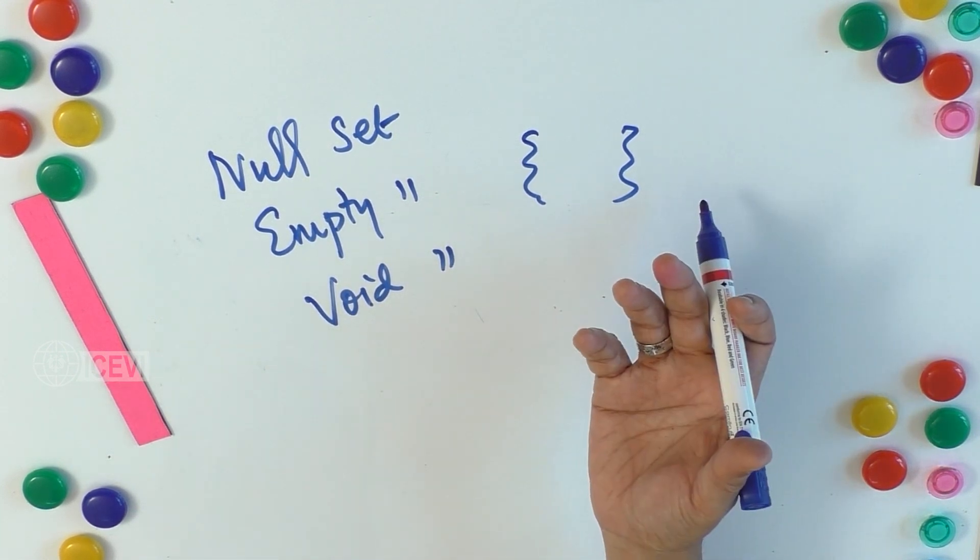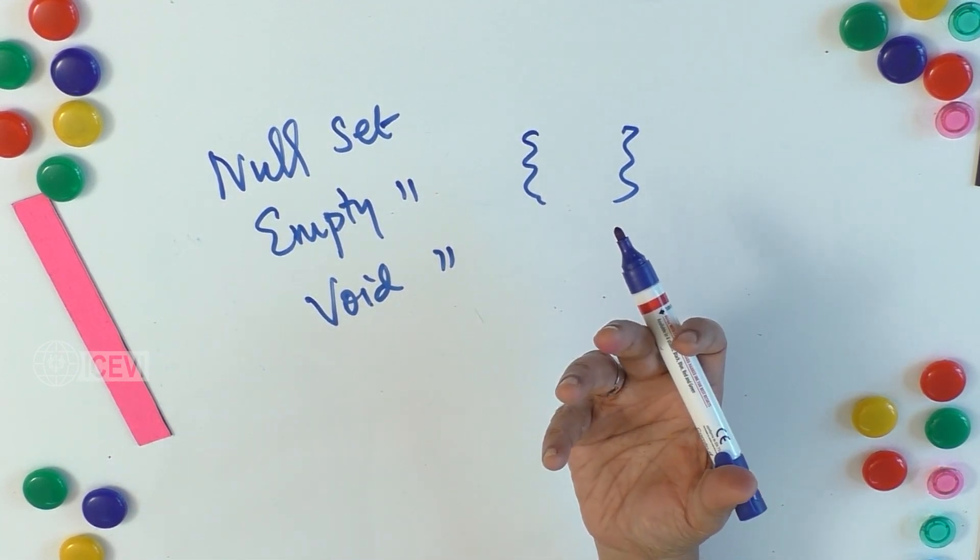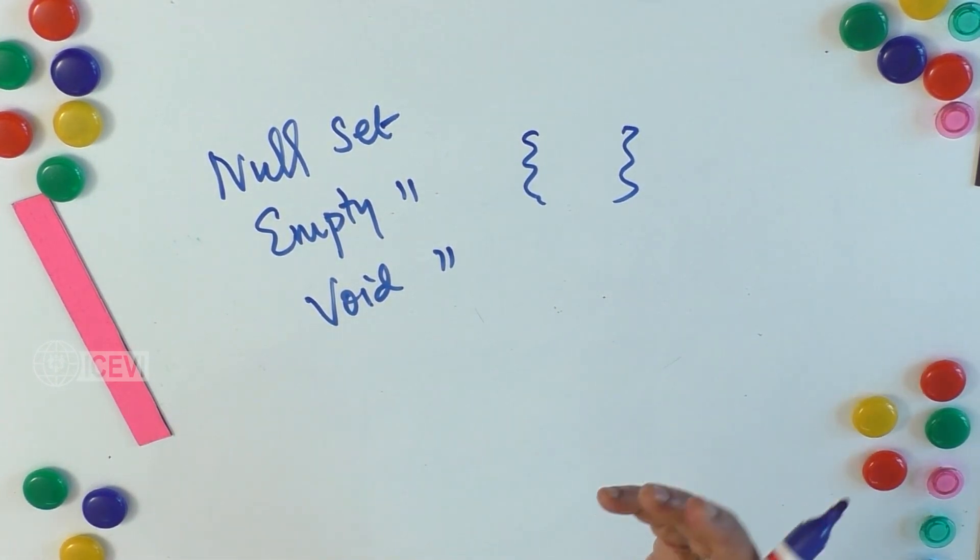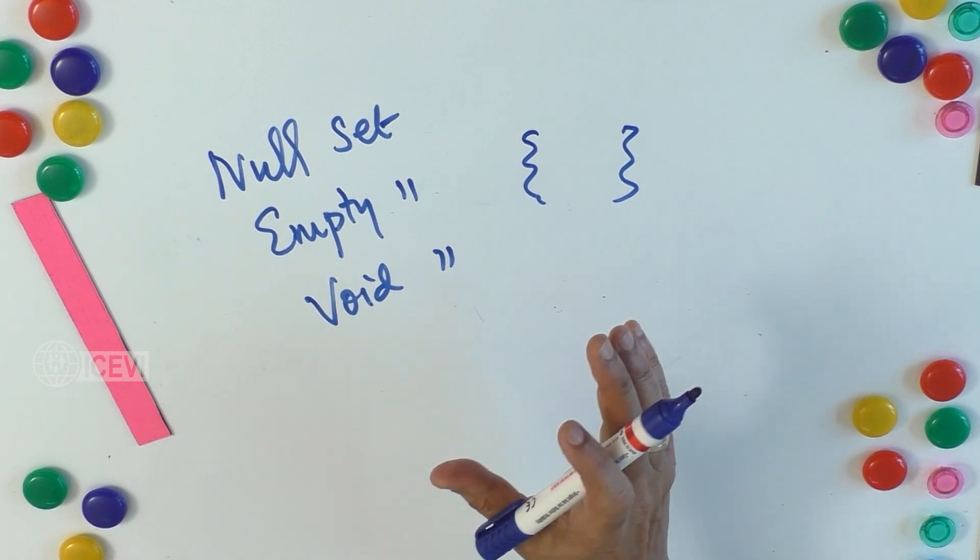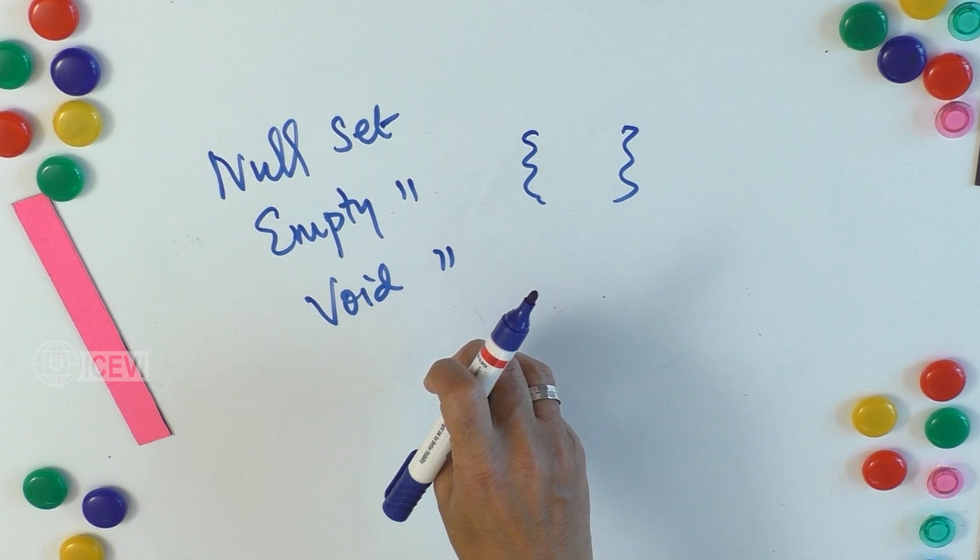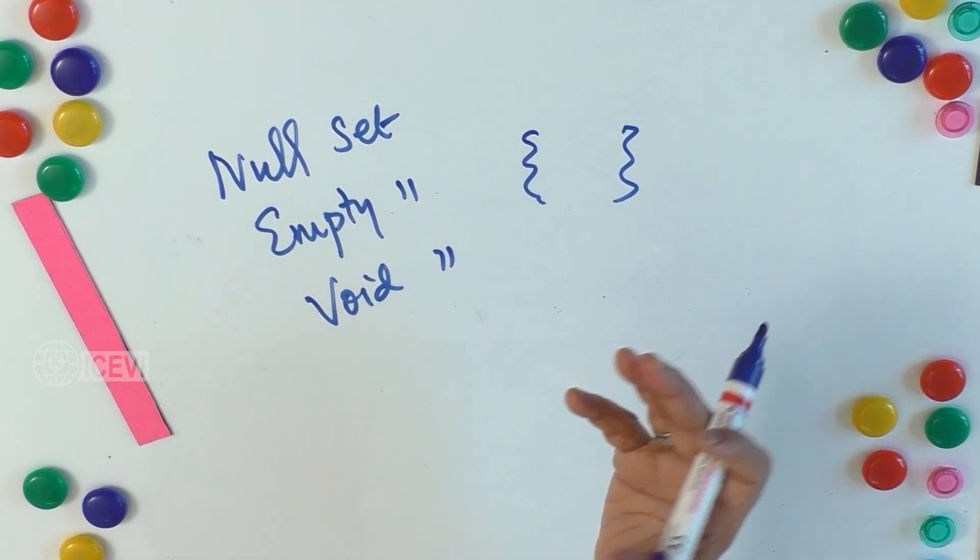Another example: you take a box without any object. Ask the child to explore. It is empty, so it is an empty set. If you consider an empty box as a set, then the elements are not there, so it can be called an empty set.